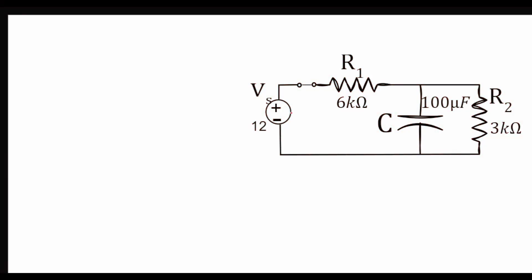This is the circuit at time t equal to 0 minus — before the switch is turned on. In this circuit, whatever current is supplied by the source, let's call it IS, it cannot flow through the capacitor. The capacitor will behave as an open circuit, and this is due to the reason that the impedance of a capacitor is given as 1/(jωC),